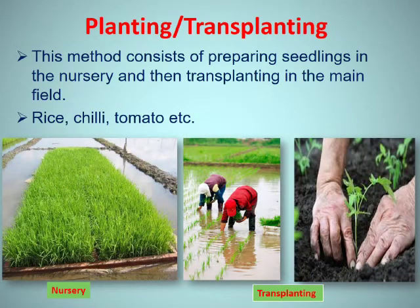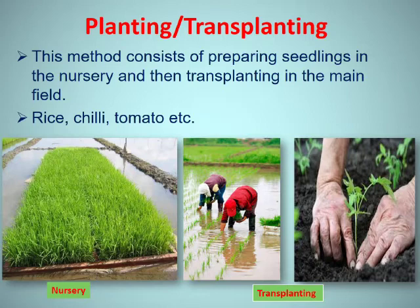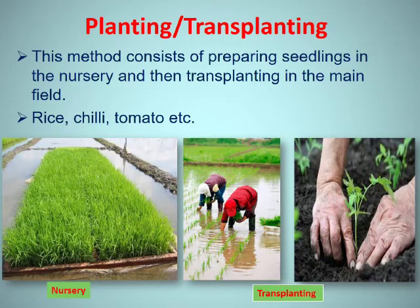Now coming to the fourth method of sowing, that's planting or transplanting. This method consists of preparing seedlings in the nursery and then transplanting them in the main field. This method is practiced in rice, chili, tomato and many other crops. Is tarike mein hum pehle ek nursery banate hain, jab seedlings tayar hoti hain to unko phir main field mein transfer karte hain. Ye hum dhan, mirchi aur tamatar mein istemal karte hain.